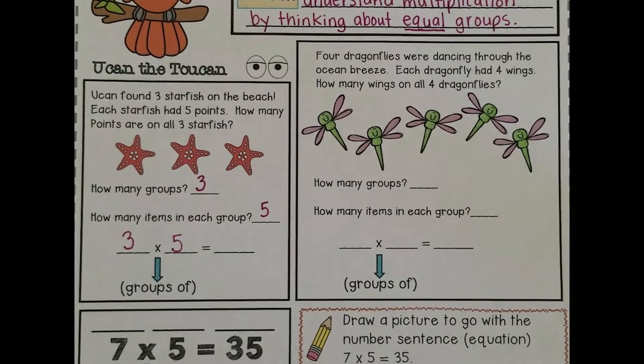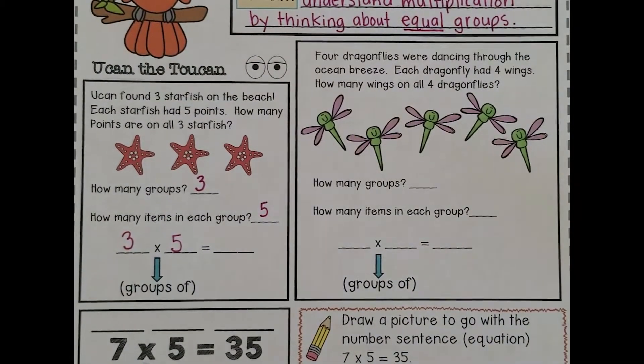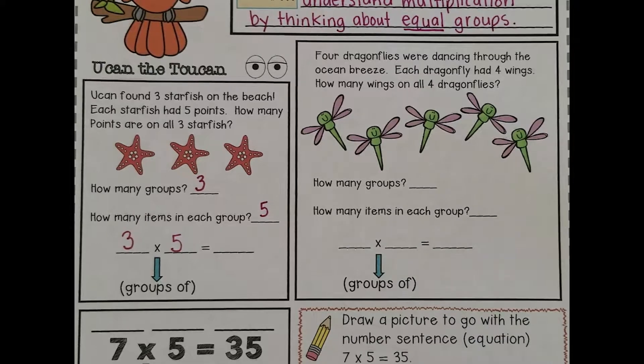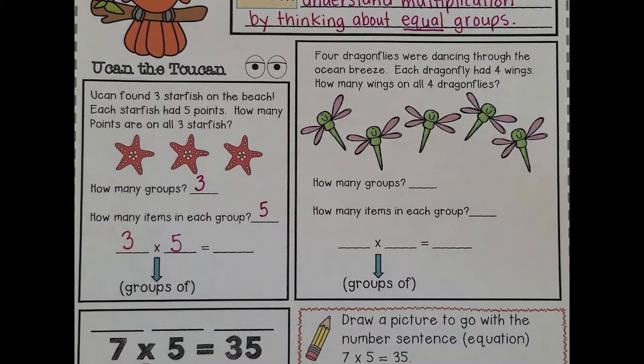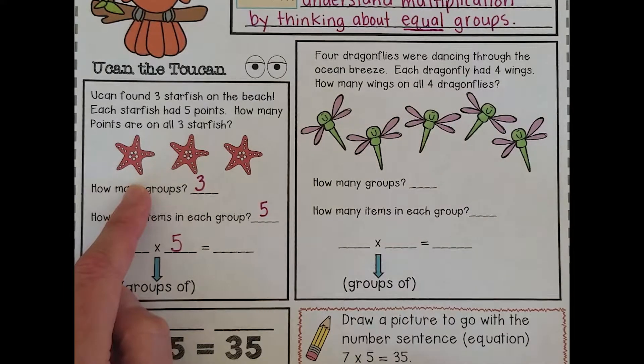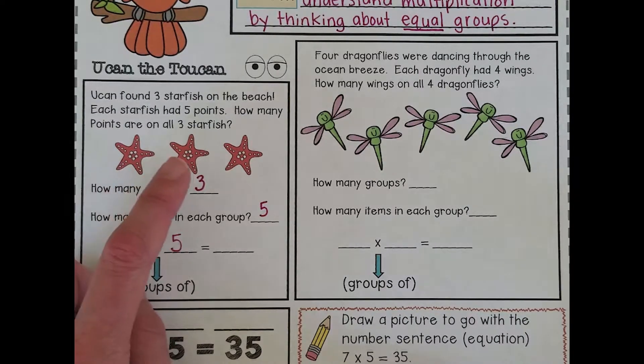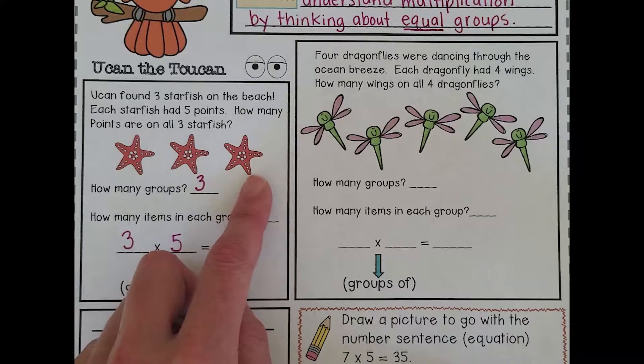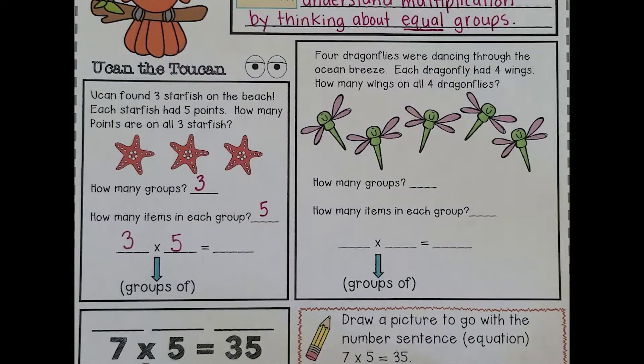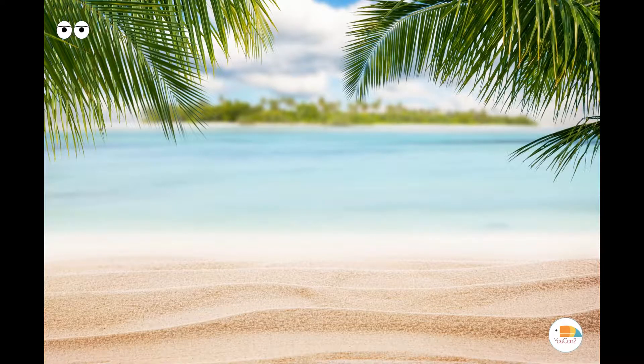And the last way is Toucan's very favorite, and it's when we count by the number of items in our equal group. For instance, because I've got five items or five points on one star, I can count by fives until I get to the end of my groups: 5, 10, 15.